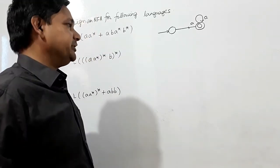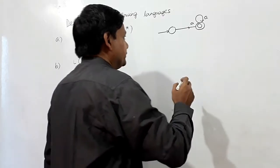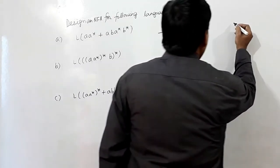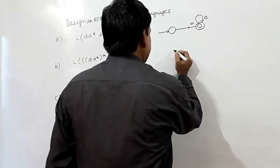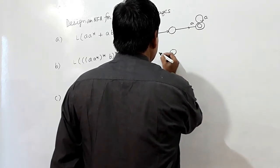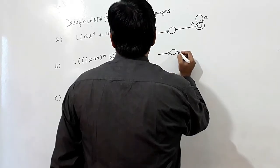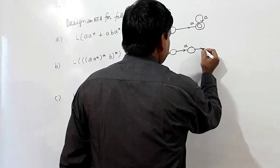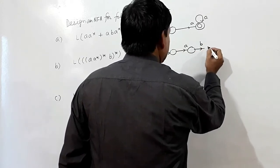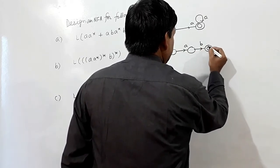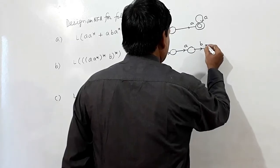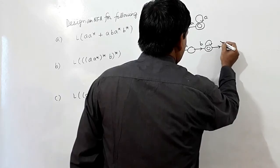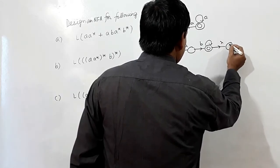For the regular expression a·b·a*·b*, we shall have another NFA. I can write it in this way: a, then b, then a*, then b*.